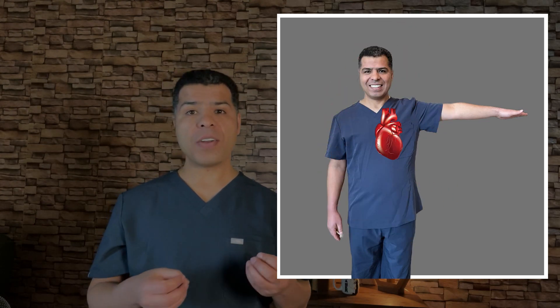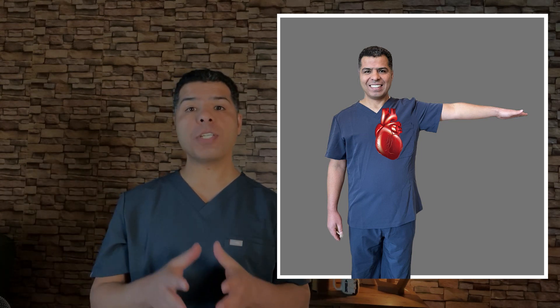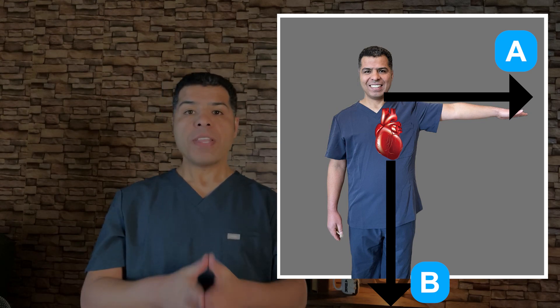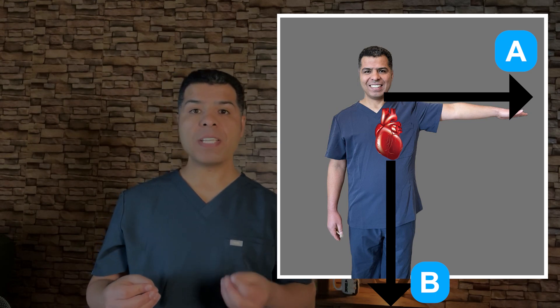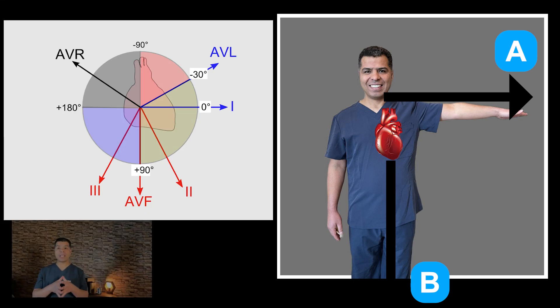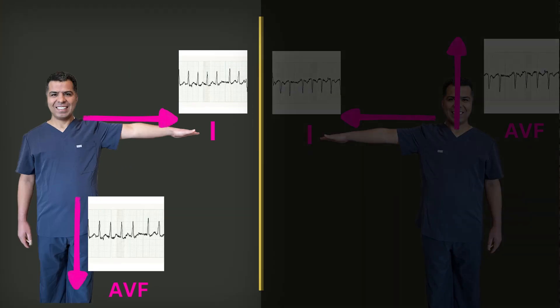Now let's assume the heart is the source of these two forces. The heart is directed downward and slightly to the left, and the ventricles represent most of its mass. The heart sends two electric forces similar to forces A and B we just explained. The magnitude and direction of force A will be detected by lead 1, which is looking at the heart from angle 0 degrees, and force B is detected by lead AVF, which looks at the heart from angle 90 degrees. The direction of each force is determined by the net QRS deflection within lead 1 and AVF — if the net deflection is positive, meaning R wave is bigger than S wave, the force is going in the direction of the lead.